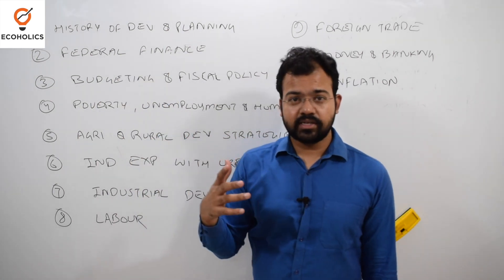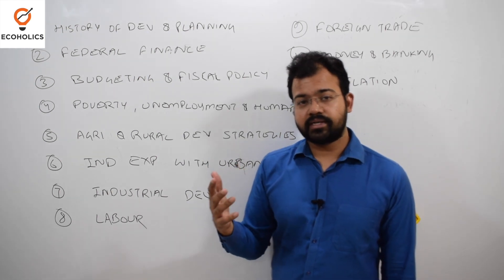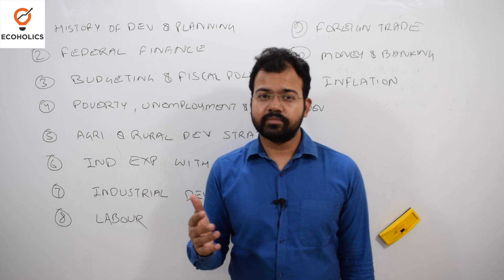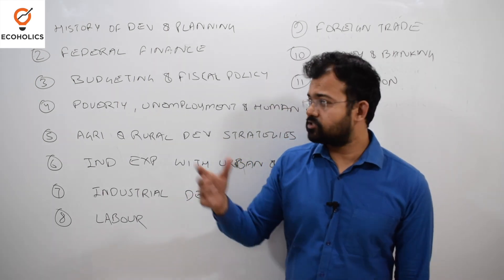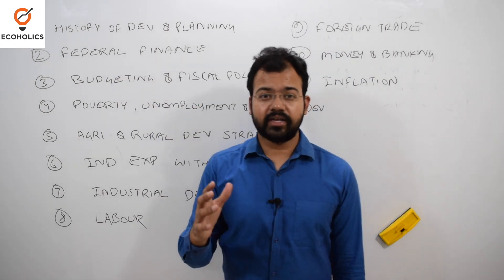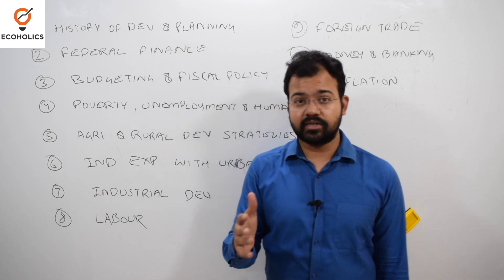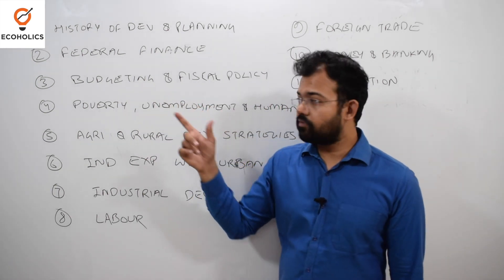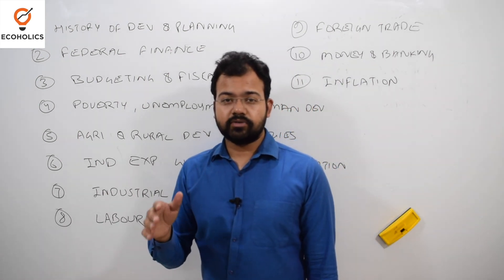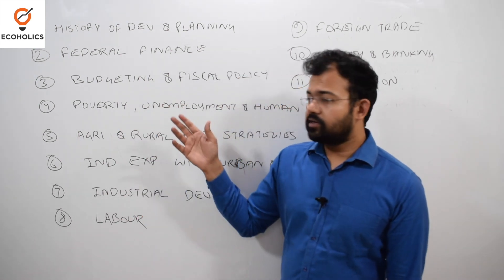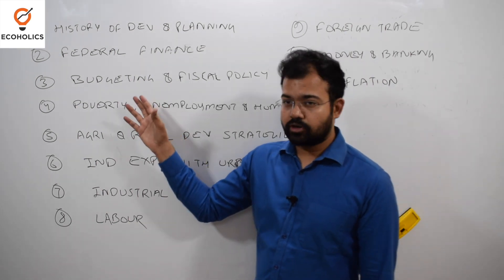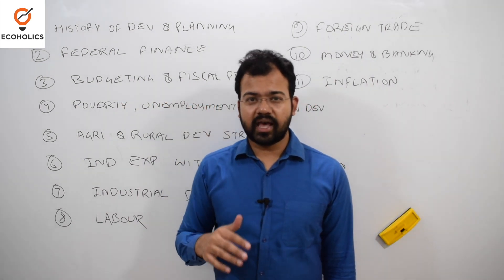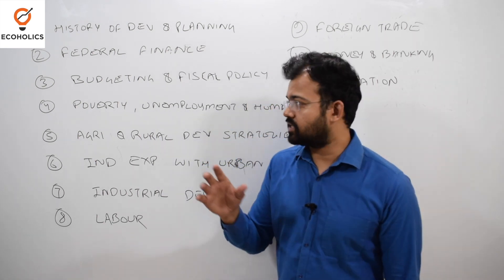For the 73rd and 74th Constitutional Amendment Act from an economic perspective, you can find a polity book that gives insights about the economic aspects of these amendments. For budgeting and fiscal policy, there is the site indiabudget.gov.in where you will find budget documents as well as fiscal policy documents — download and study these in detail.